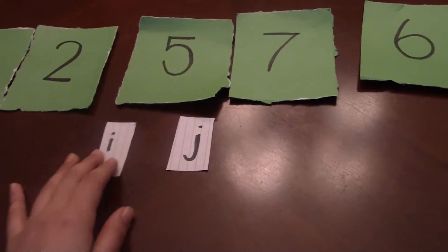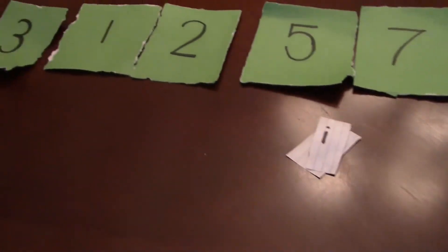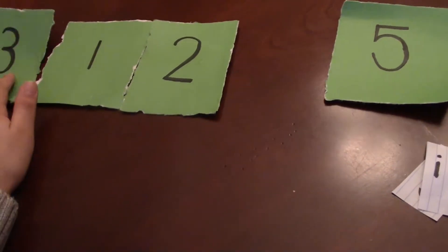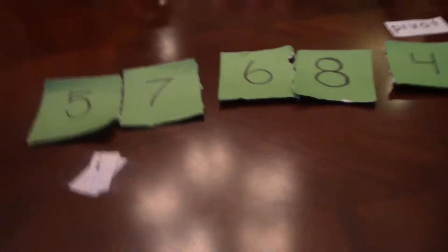And so now basically what we've done, and then now our counters are going to cross which means we know we're done. So now basically we have two different groups that we have to then subdivide in order to do quicksort again. So we have this group of three and this group of five.